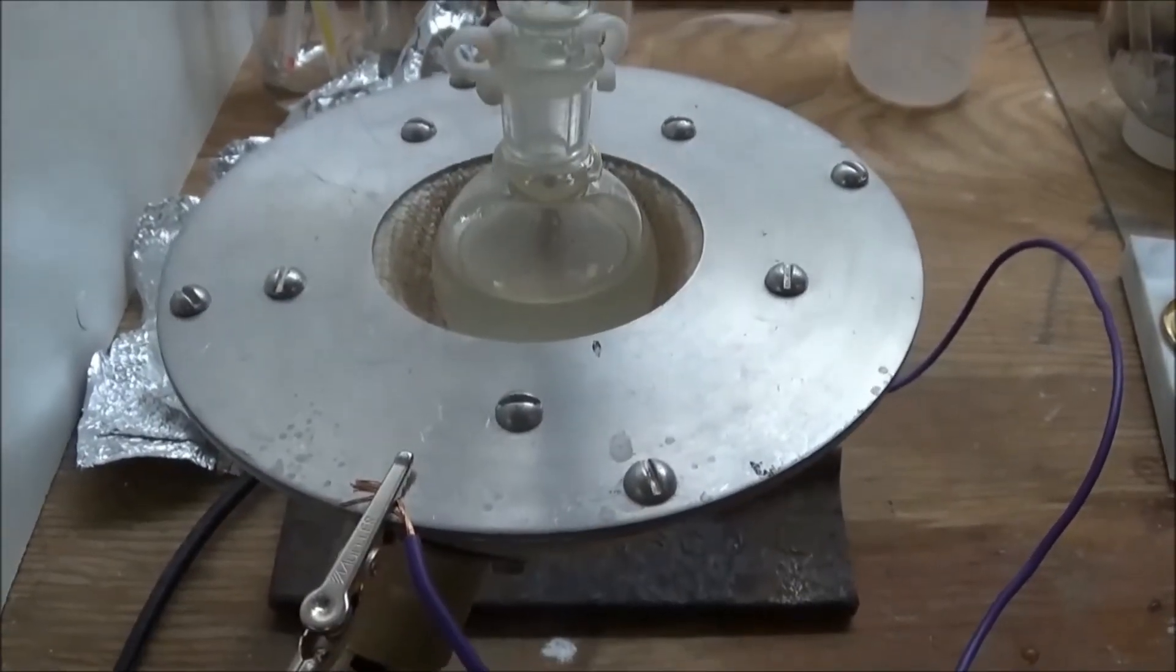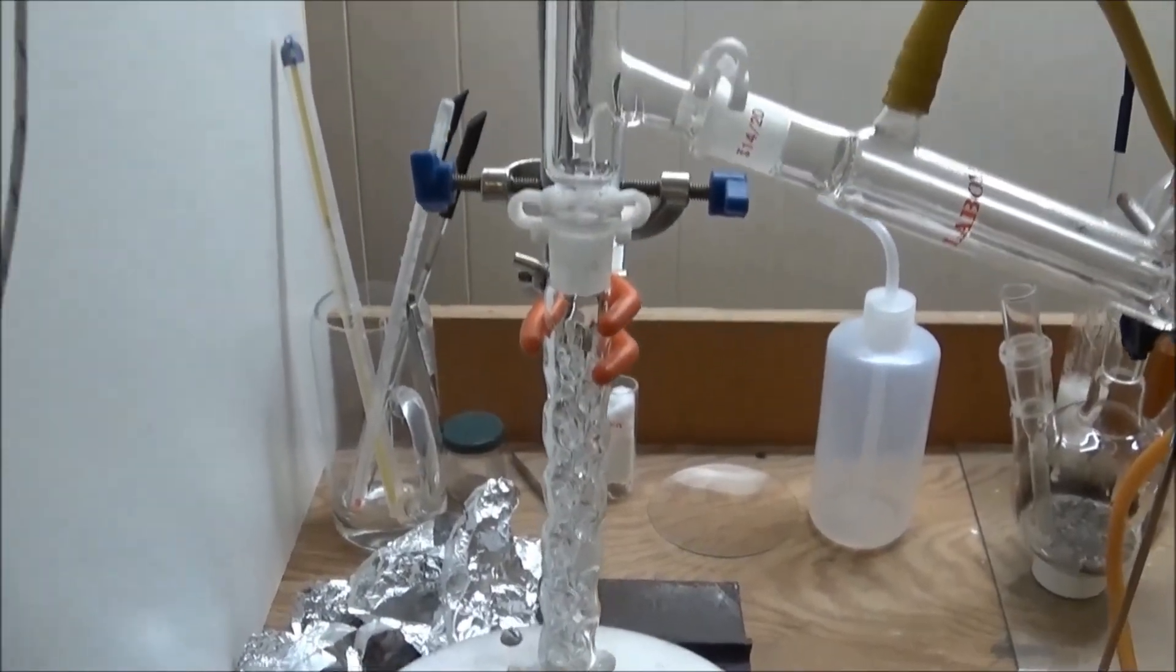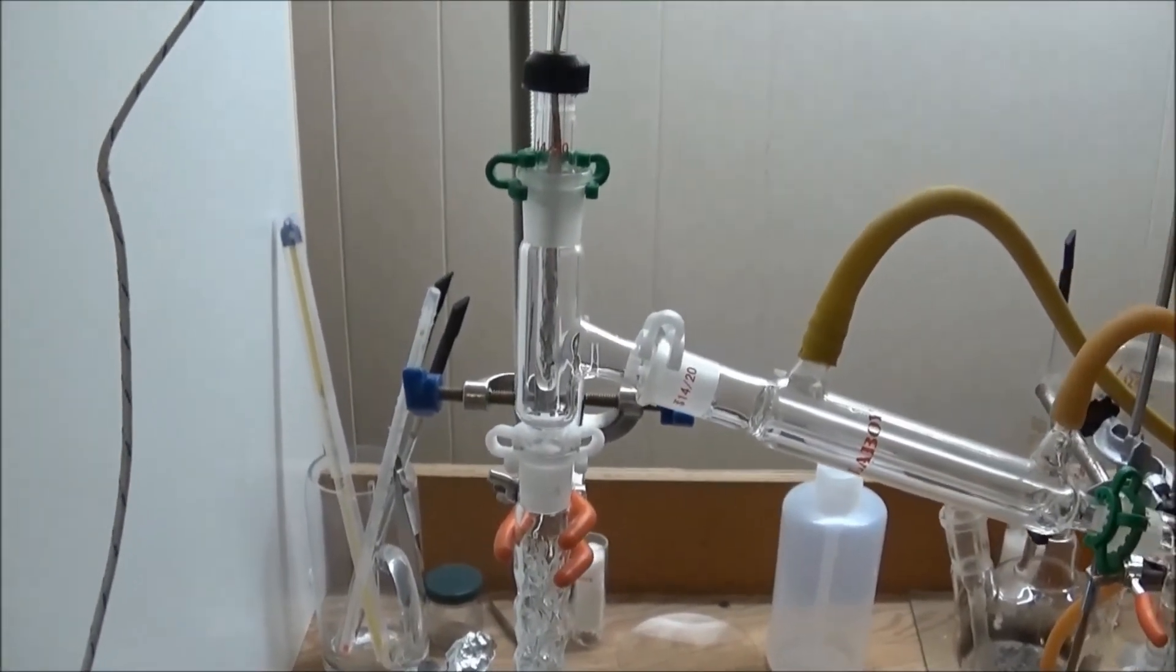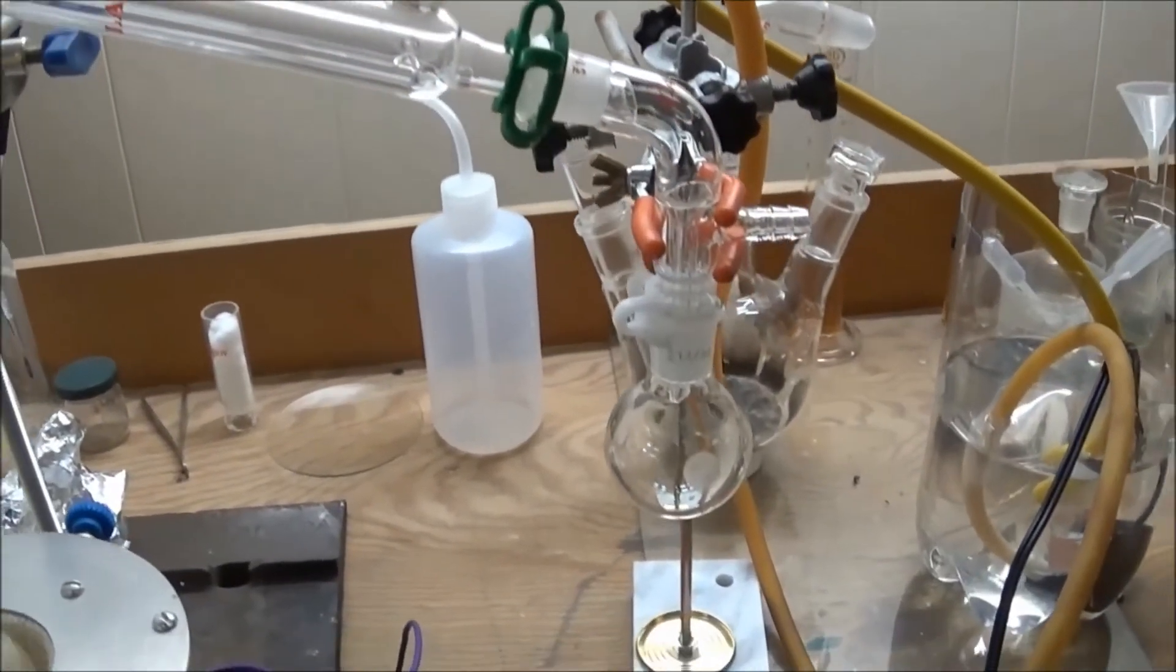On top of this was attached a Vigreux column, which went to a distillation adapter, a Liebig condenser, a vacuum takeoff adapter, and finally a receiving flask.